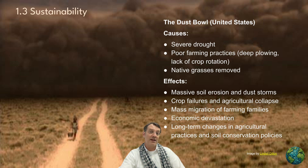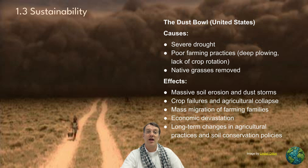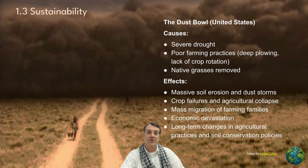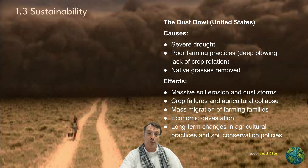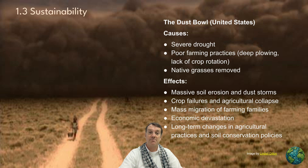The Dust Bowl, which we encountered in Topic 1.1 on perspectives, was caused by a severe multi-year drought combined with poor farming practices: deep plowing, no crop rotation, and the removal of native prairie grasses from central North America. Those grasses had very deep root systems that held soils in place. When replaced with shallow-rooted crops, wind and lack of rain allowed soils to blow away.